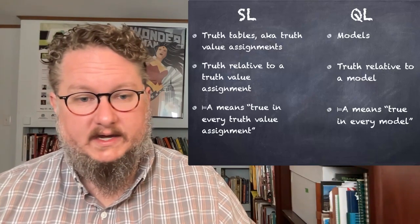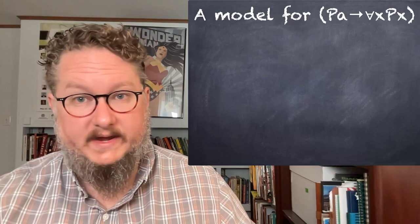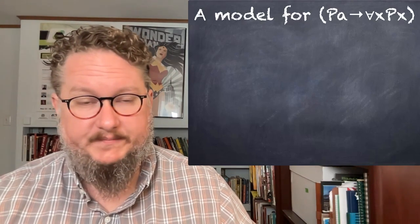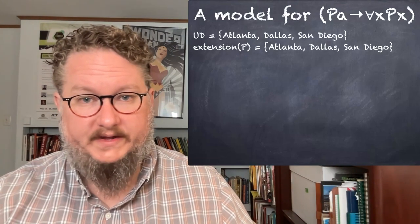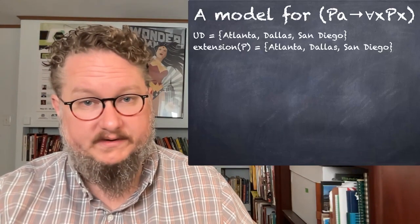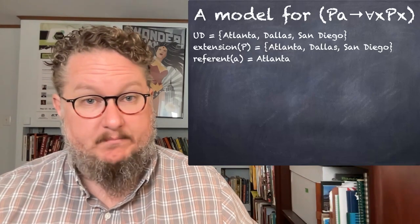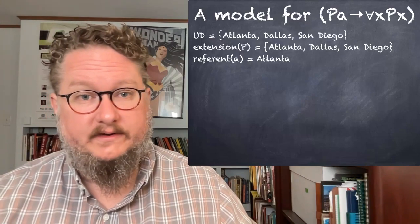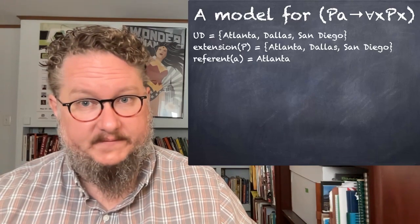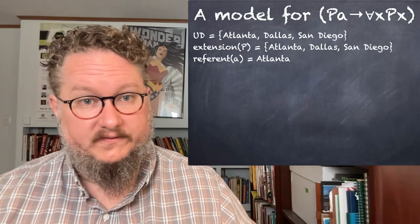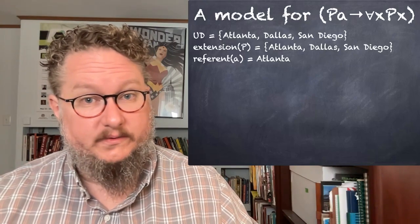So that's a reminder of how SL and QL line up. Let's construct a model to evaluate the sentence: if PA, then for all X, PX. Here's a universe of discourse containing three cities: Atlanta, Dallas, and San Diego. We'll say the extension of predicate P includes all three, and the referent of A is Atlanta. On that model, the statement is true: PA is true because Atlanta is in the extension of P, and ∀x Px is also true because every item in the universe of discourse is in the extension of P. So the antecedent is true and the consequent is true, making the conditional true.